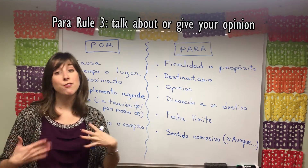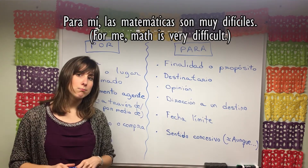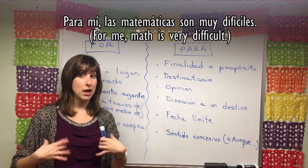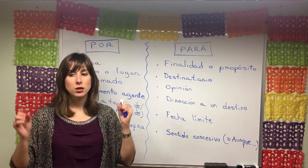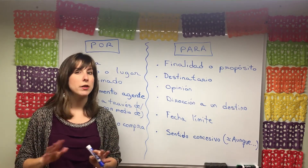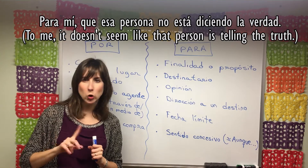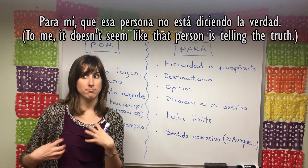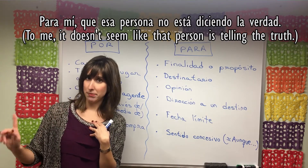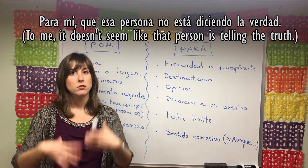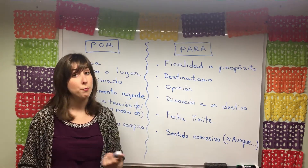We also use para to give an opinion. 'Para mí, las matemáticas son muy difíciles' — in my opinion, math is really difficult. Or if you think someone isn't being honest: 'Para mí que esa persona no te está diciendo la verdad' — if you want my opinion, that person is not telling you the truth. So para mí is used to introduce a personal viewpoint.